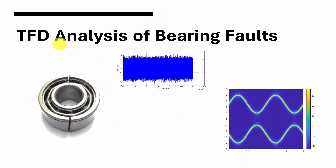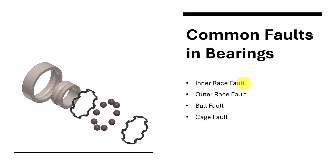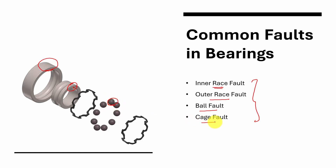First, time-frequency domain analysis of bearing faults — how faults in a bearing can be identified using this analysis. In general, bearings are subjected to four types of faults: inner race fault, where there is a crack or pit hole in the inner race; outer race fault; ball fault, where there may be a defect or worn-out ball; and cage defect. These four are the common faults in bearings.